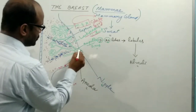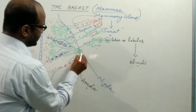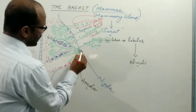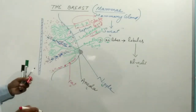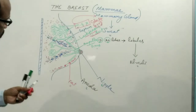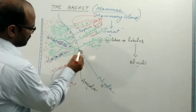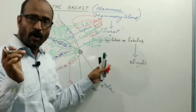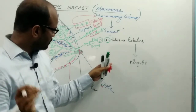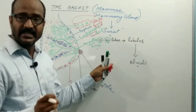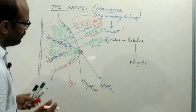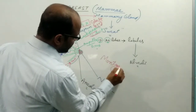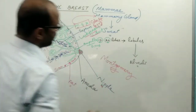The nipple is pigmented in structure. In the case of a virgin, it is pinkish in color, but at the time of pregnancy it becomes more pigmented or darker. The base of the nipple is provided with very small tuber-like or bump-like painless glands. These are the sebaceous glands, known as the Montgomery glands, which secrete oily material and keep the nipple and areola lubricated.